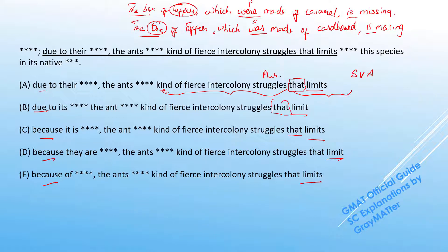And this is a plural noun. Because it's the struggles that are limiting the spread of the species and because it's plural, the singular verbs are out. So we're down to B and D.